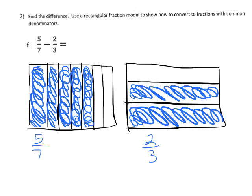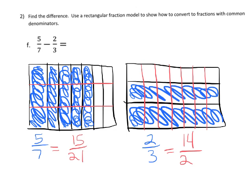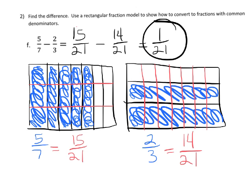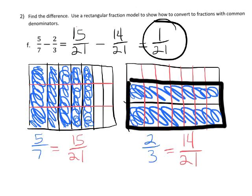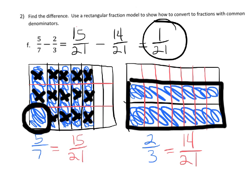Remember, we're going to cut each of the sevenths into thirds, and each of the thirds into sevenths. So our five sevenths becomes fifteen twenty-firsts, and our two thirds becomes fourteen twenty-firsts. So we have fifteen twenty-firsts minus fourteen twenty-firsts, which equals one twenty-first. We can show by X-ing out — one, two, three, four, five, six, seven, eight, nine, ten, eleven, twelve, thirteen, fourteen — and there is our one twenty-first.